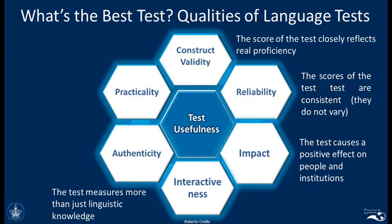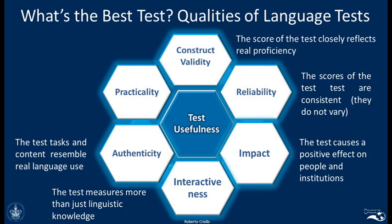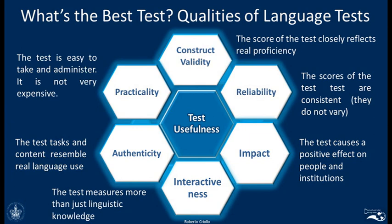The next component is interactiveness. Your test doesn't have to measure just your linguistic knowledge — not just vocabulary and grammar — but also your ability to express points of view, talk about different topics, and demonstrate intellectual abilities. Authenticity is related to this: the tasks in the test should resemble real language use, so you're not just circling answers or filling blanks, but interacting with a tester, writing texts, or doing things you would do in real life. Finally, practicality means the test should be easy to take and administer, and should not be very expensive.